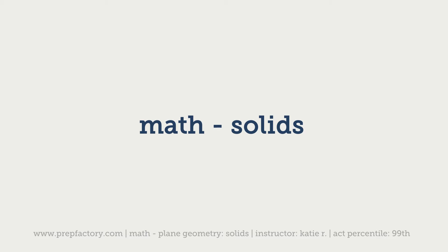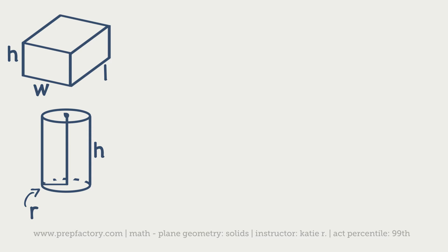When we talk about solids, the two most popular on the test are rectangular prisms — including cubes — and cylinders. For a rectangular prism, volume is pretty easy: it's all three side lengths multiplied together, so length times width times height. The basic idea with any uniform regular solid is you take the area of the base and multiply it by the height.